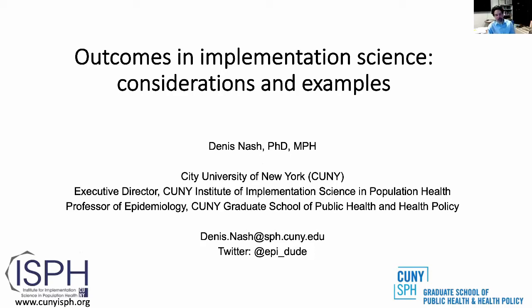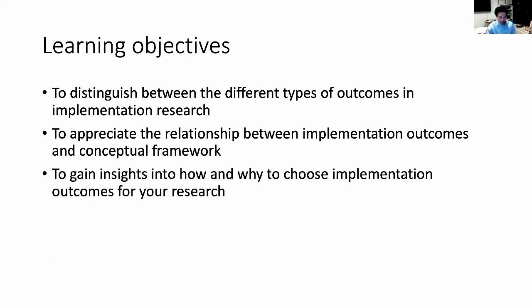This lecture — and probably you've covered some of this in prior sessions as well — is very focused on implementation science, specifically something called implementation outcomes, as much as and distinguished from health outcomes. The point of this part of the session is to begin to distinguish between the different types of outcomes used in implementation research, to appreciate the relationship between implementation outcomes and a conceptual framework, and to start to gain insights about how and why to choose implementation outcomes for your research.